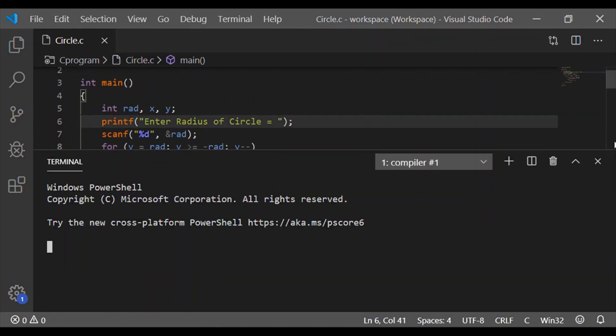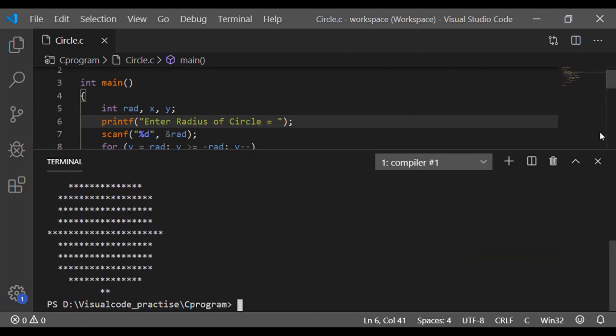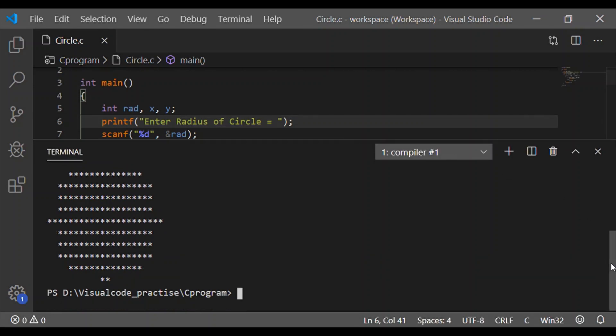Let me give one more radius as 5. The full pattern of the circle of radius 5 is visible. It is not a perfect circle because we have considered integer variables.